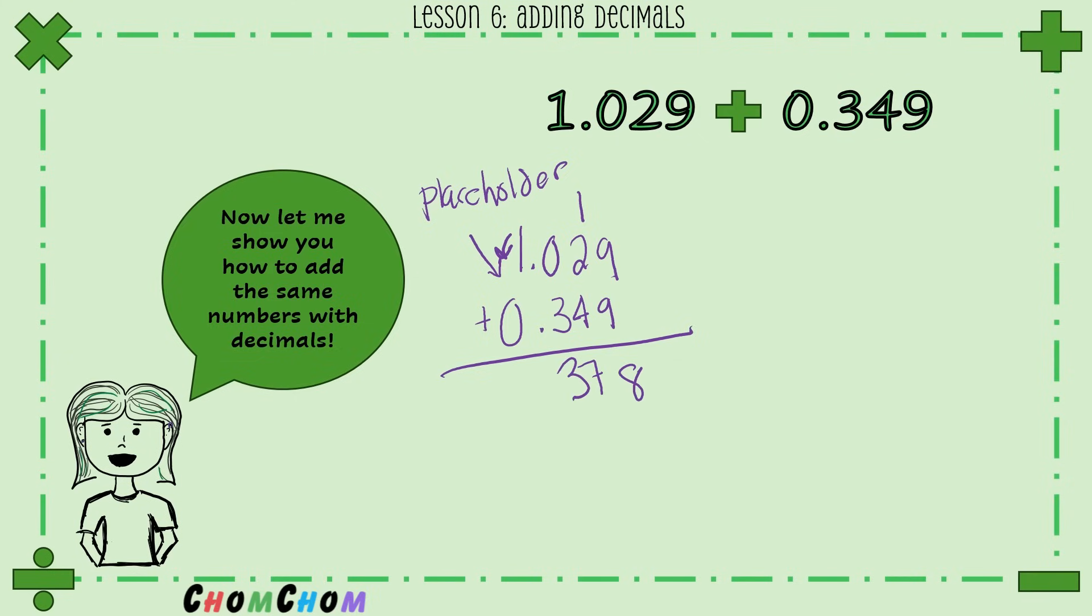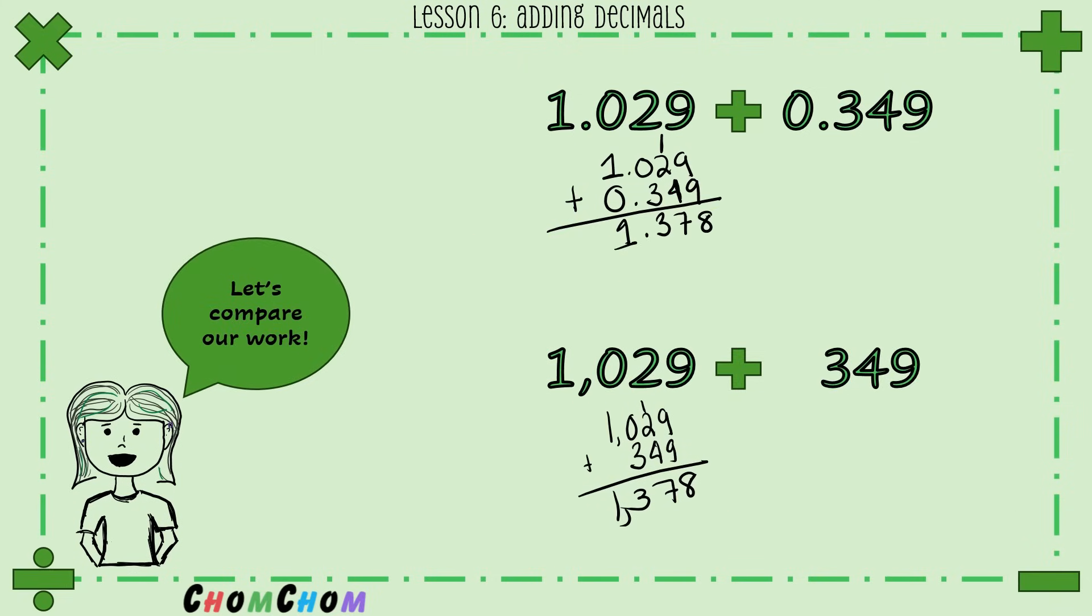And we have a 3, then we have 1. So you have, and we carry that decimal down, so we end up with 1.378. Doesn't that look similar? Look, this one just has a decimal place here and this one has a comma for when we have four digit numbers.